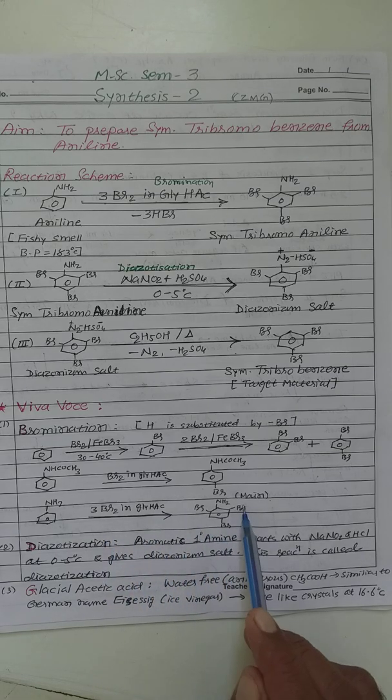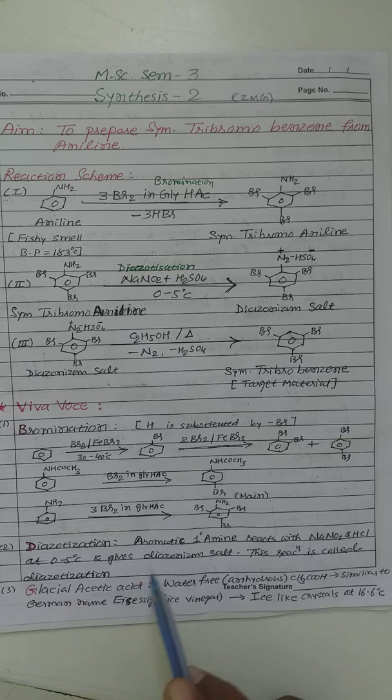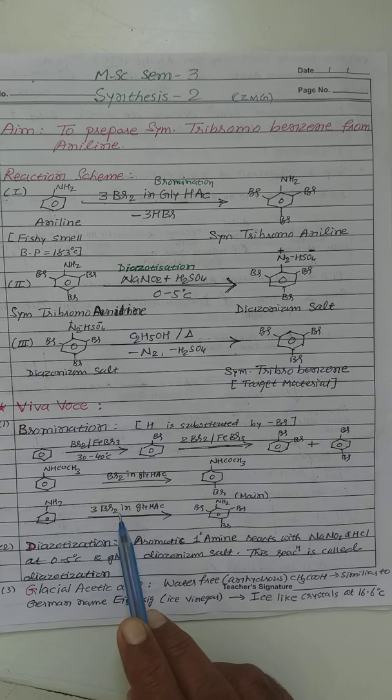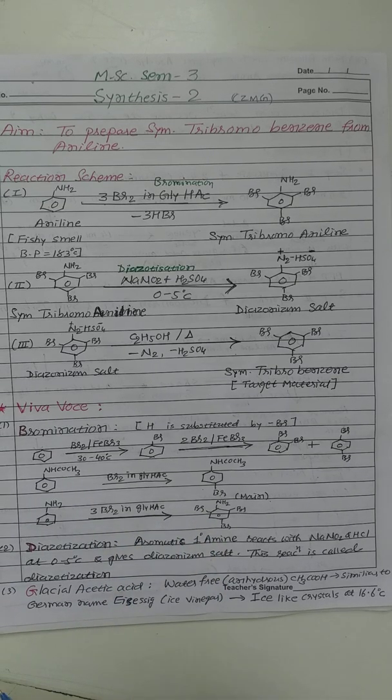Now third number, if you want to attach 3-Bromine, so bromination occur in the presence of 3-Bromine water in glacial acetic acid.